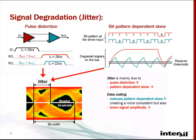Data encoding reduces pattern-dependency skew by avoiding long strings of ones and zeros through the introduction of additional transitions into the data stream. This creates a clock-like signal with more consistent bus voltage,